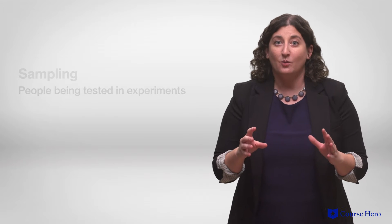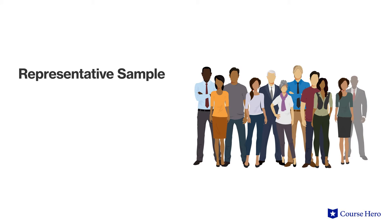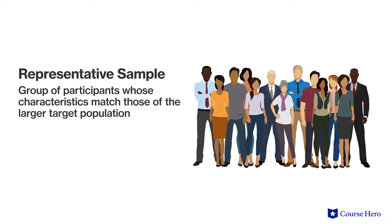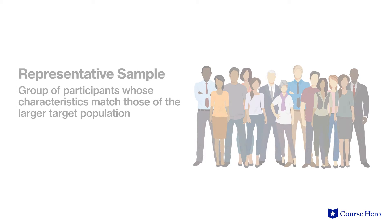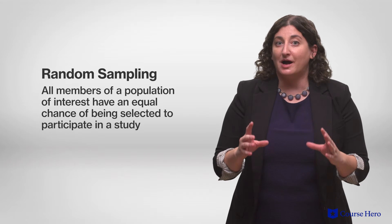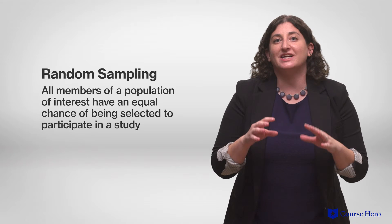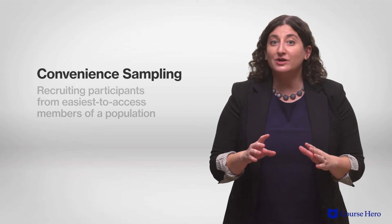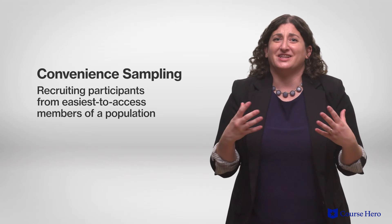Another challenge is sampling, or who we are testing in our experiment. We can't have everyone in a target population participate in a study — we could never get all smokers. So instead, we try to get a representative sample, a group of participants whose characteristics match those of the larger target population. Researchers are also encouraged to use random sampling, where all of the members of a population of interest have an equal chance of being selected. But oftentimes, researchers must rely on convenient sampling, recruiting participants from the easiest-to-access members of a population.